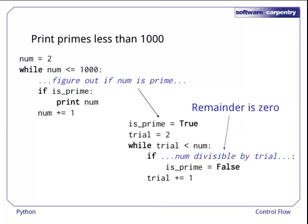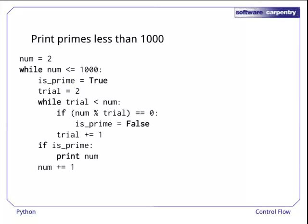Saying that it can be divided evenly is the same as saying that there's no remainder, which tells us how to fill in the last bit of our program. Putting the whole thing together gives us this, which is just the bits of code we wrote, put in order.